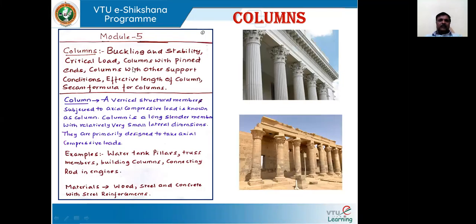Under columns, we will be studying about the buckling and stability of columns, how to design the column for safe load without buckling and to maintain the stability, then what is the critical load for which we need to design the columns, then columns with different end conditions like pin ends and free end. We will also study the effective length of a column and how it differs from the actual length, along with some secondary formulas for columns.